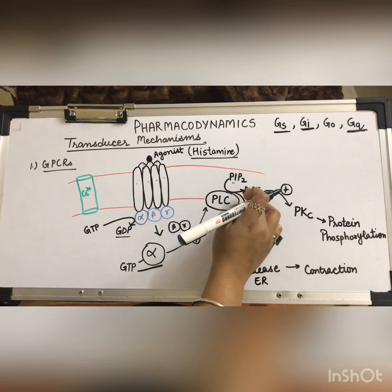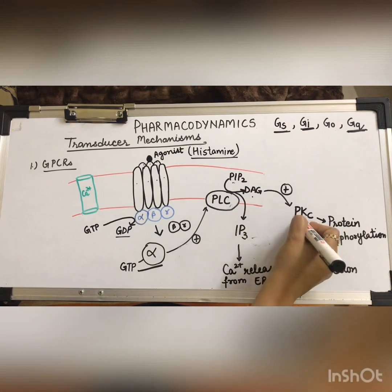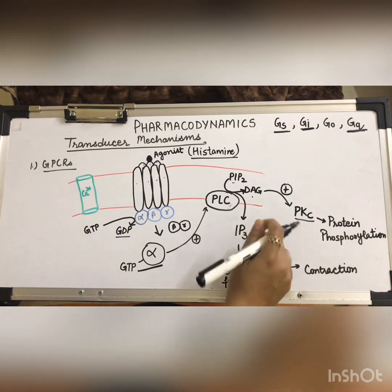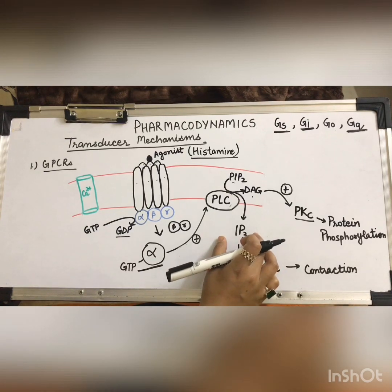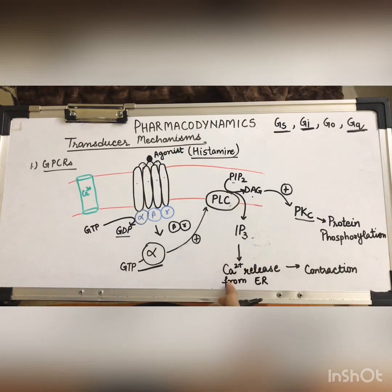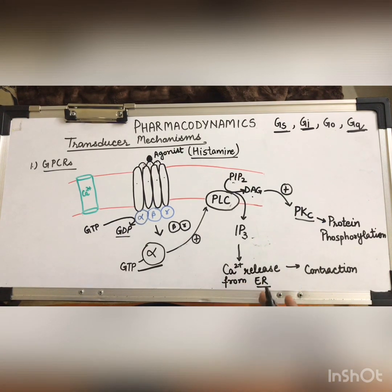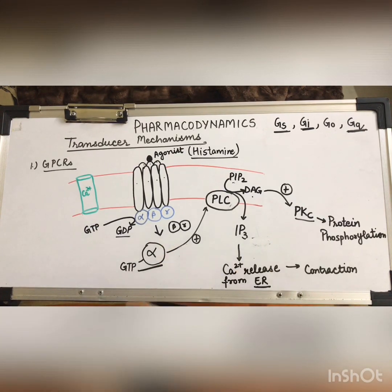Phospholipase C converts membrane phospholipids — specifically PIP2 (phosphatidylinositol 4,5-bisphosphate) — into DAG (diacylglycerol) and IP3 (inositol 1,4,5-trisphosphate). DAG remains in the membrane and activates protein kinase C with the help of calcium. IP3 is water-soluble and diffuses to the cytosol, where it reaches the endoplasmic reticulum.